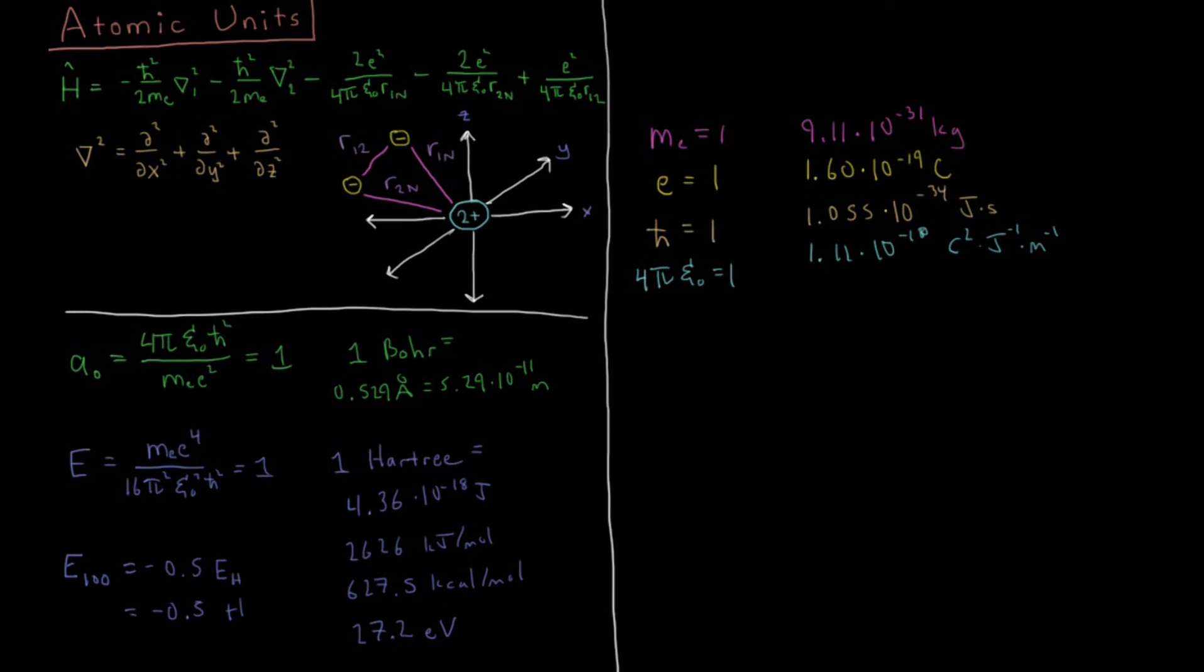So when we take all these things into account, what do we end up getting for our Hamiltonian of a helium atom? And we'll see how much simpler this ends up being. We get our Hamiltonian is, well, this is 1, this is 1, this is 1, 4 pi epsilon naught is 1. So this all simplifies down to, we get a minus 1 half del squared 1 plus del squared 2, kinetic energy of electron 1 and electron 2, minus 2 over r1n, distance from electron 1 to the nucleus, minus 2 over r2n, plus 1 over r12, distance between the two electrons.